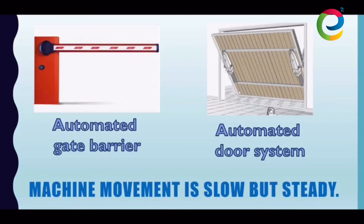Likewise, in certain car parks in Singapore, you'll also find a very interesting sight. There are some car parks which have a car lift, and in this car lift they use an automated door. These automated doors also use speed reducing transmission to work. So although these machines are slow, they are steady.